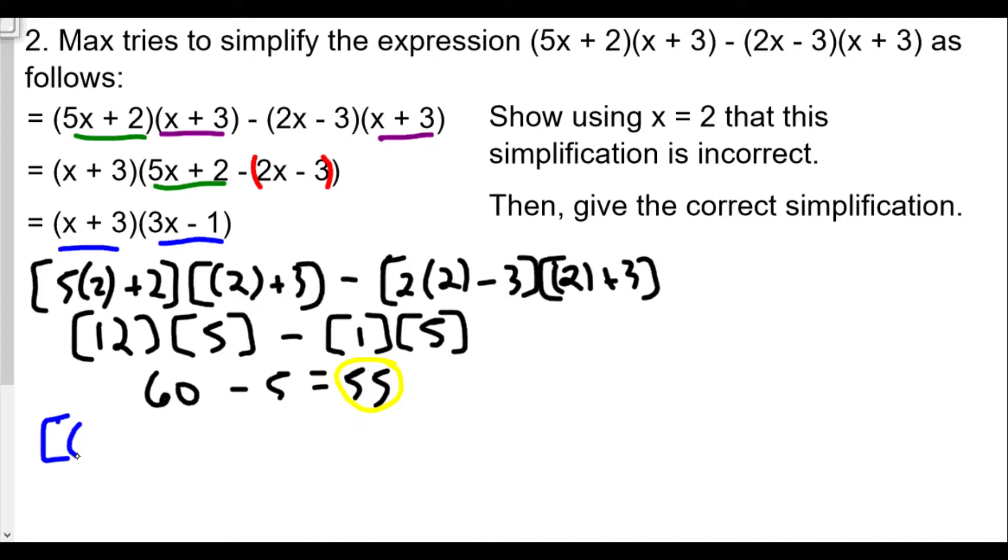No matter what, after we factor, we should always get the same value if it's equal to each other. For example, if I plug in 2, I should get 55 for this. We have (x + 3), which is (2 + 3), times (3 times 2 - 1). That's 5 and 3 times 2 is 6 minus 1 is also 5, so 5 times 5 is 25. Notice that they're not the same, not equal.